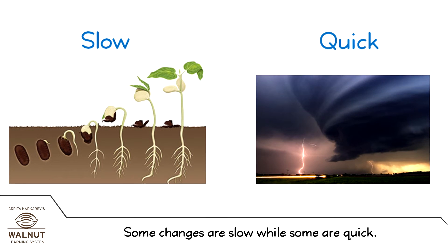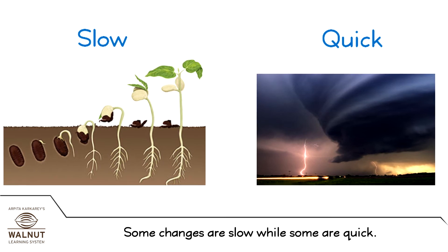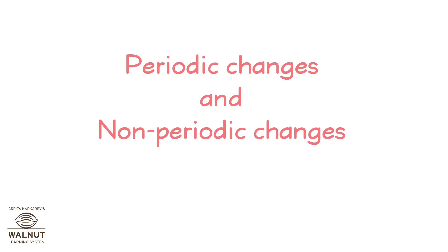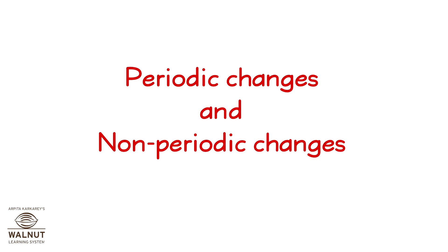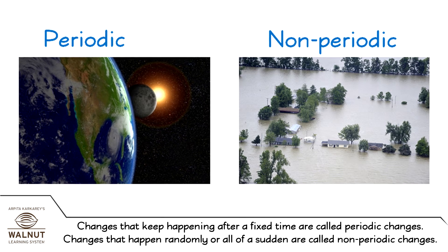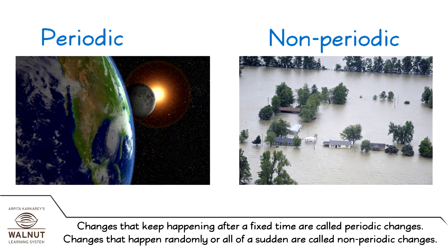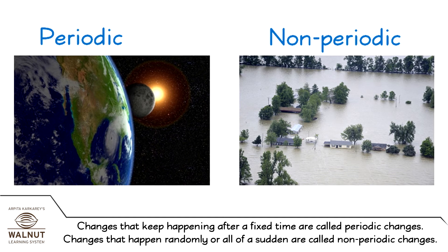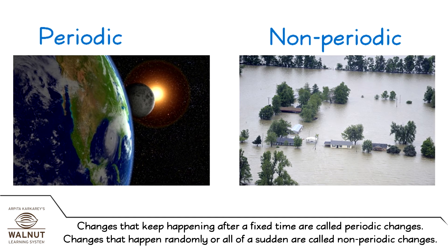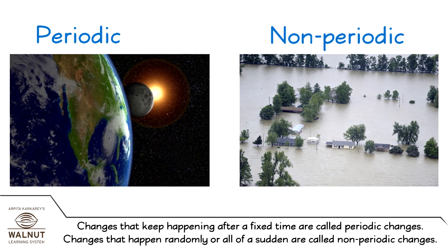Some changes are slow while some are quick. Periodic changes and non-periodic changes. Changes that keep happening after a fixed time are called periodic changes. Changes that happen randomly or all of a sudden are called non-periodic changes.